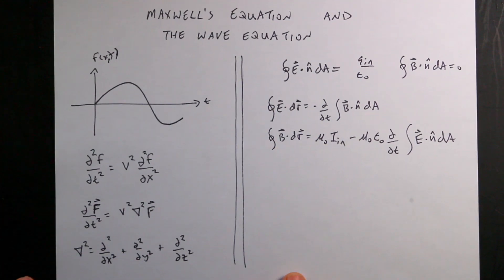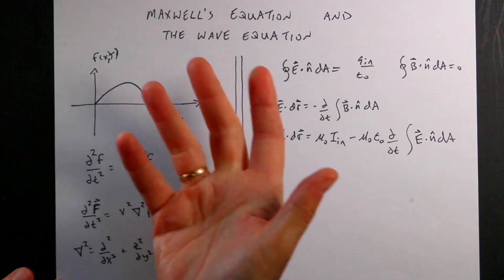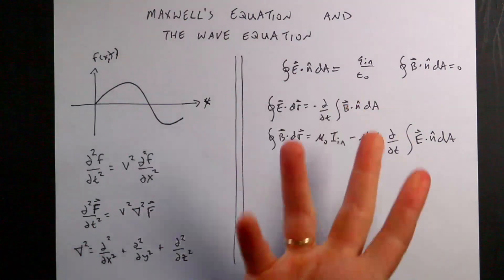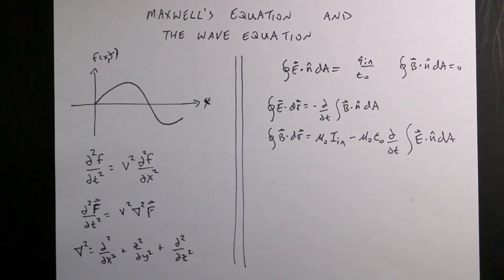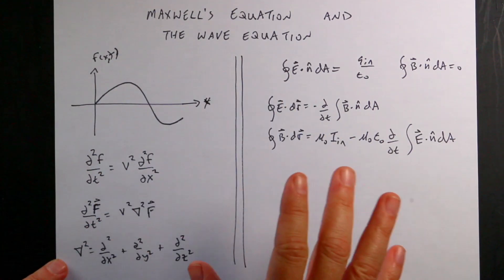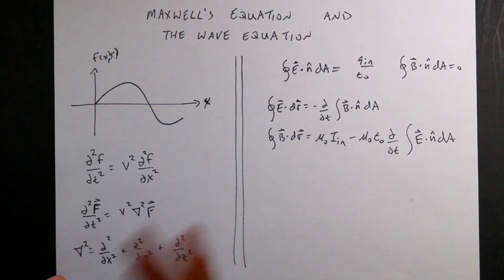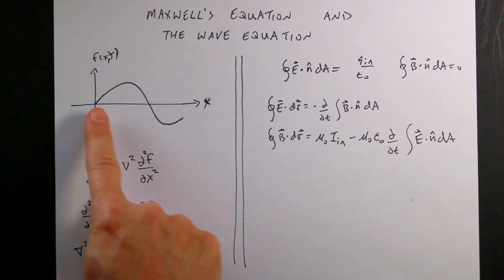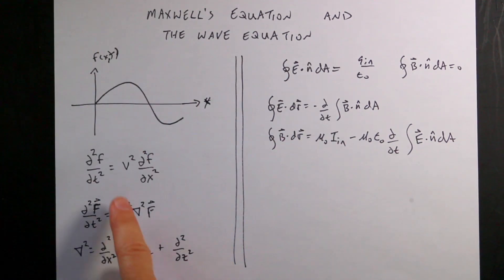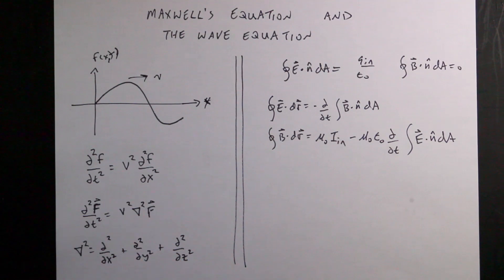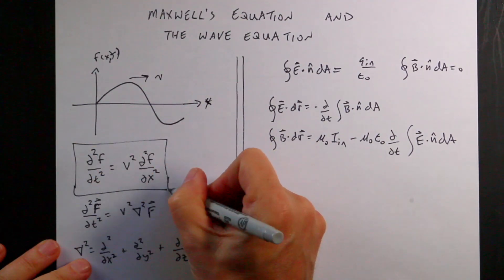Number one: what is the wave equation? Suppose I have a string stretched in the x direction, and I displace it and let it go, or I have some form when I let it evolve in time. Each position on this moves up and down, and we can describe the solution with the wave equation. It says that this function of x and t — a one-dimensional string — the second partial of that function with respect to time is equal to the velocity squared times the second partial with respect to space. That is the wave equation in one dimension. Super important. Super useful.